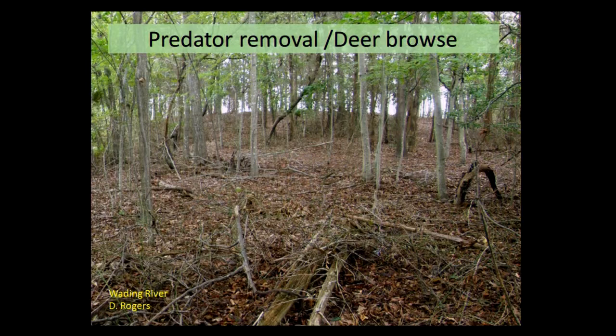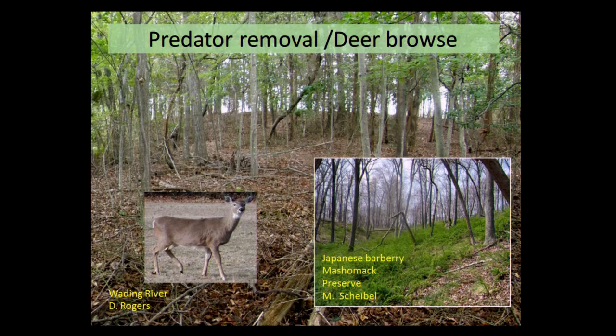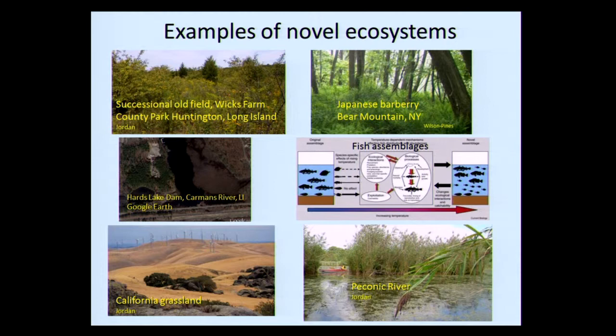Here's a photo of a wading river — Derek Rogers' photo — showing a denuded understory caused by deer. Deer browse can lead to resurgence of non-native species, like Japanese barberry at Mishoma Preserve.